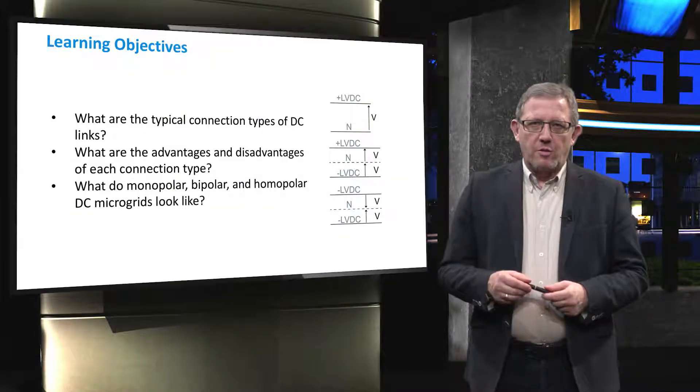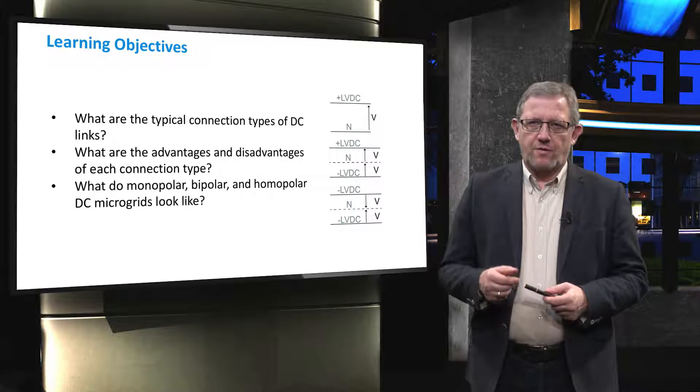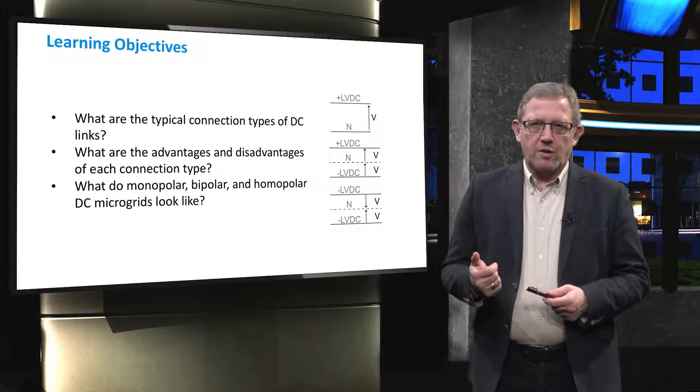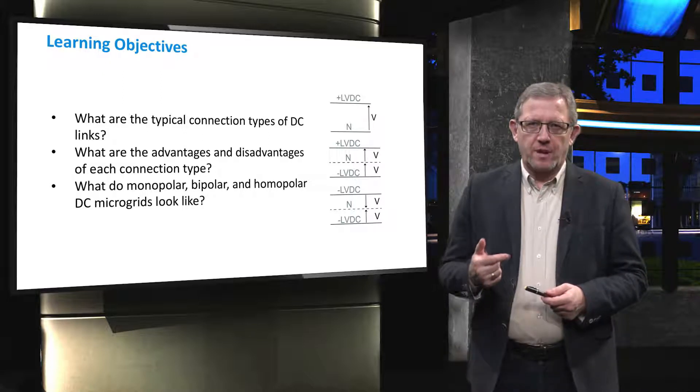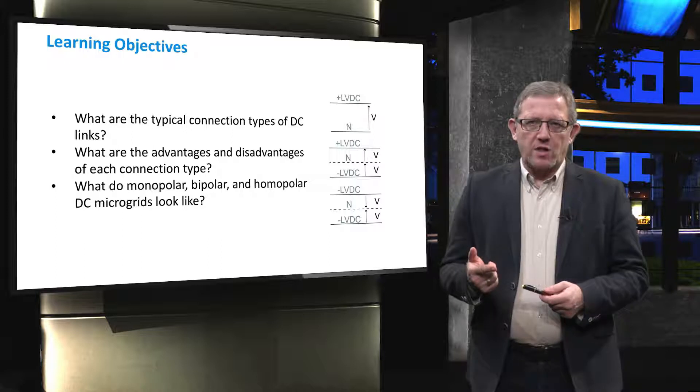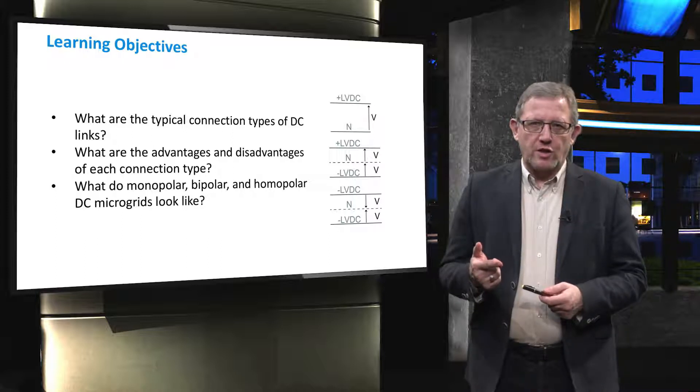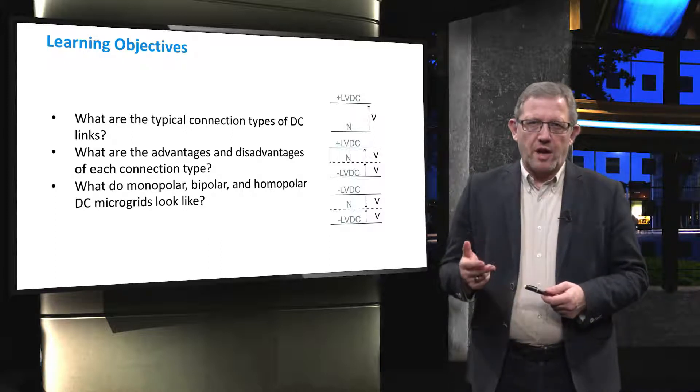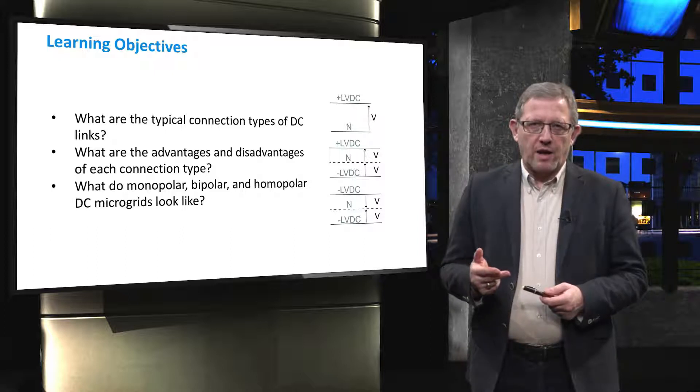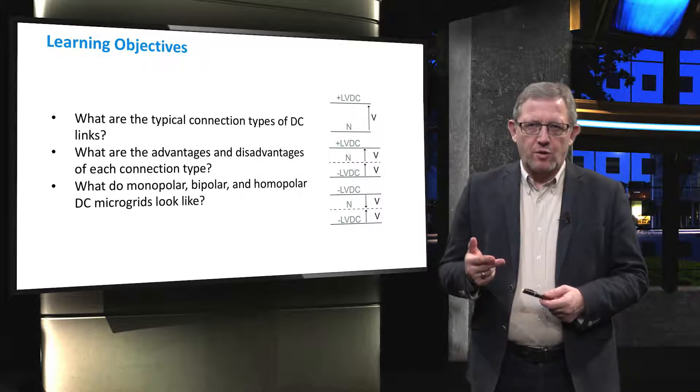The main learning objectives fall under three main questions. First, what are the typical connection types of DC links? Second, what are the advantages and disadvantages of each connection type? And third, how a monopolar, bipolar and homopolar DC grids would look like.